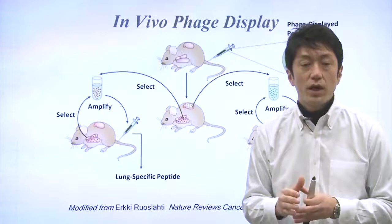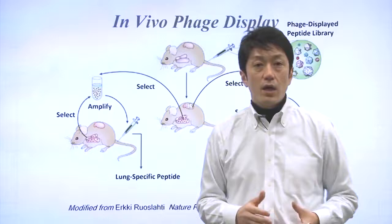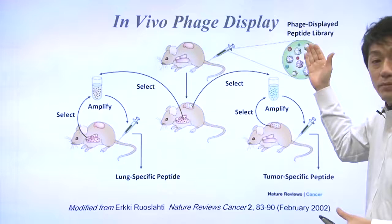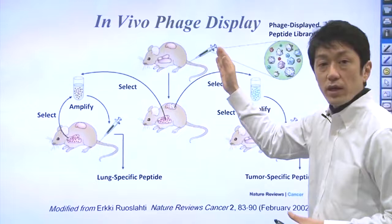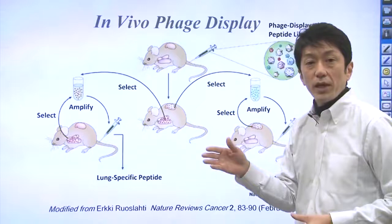In vivo phage display was originally developed by the research team led by Dr. Aki Leosradi in La Jolla, California. With this technology, a phage-displayed peptide library is prepared and administered into a mouse with a tumor. After allowing the phages to migrate inside the body, the tumor is removed.